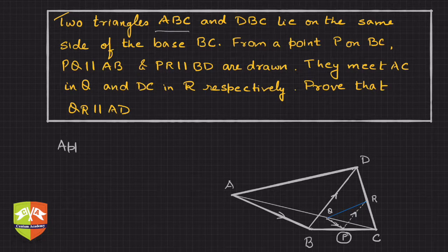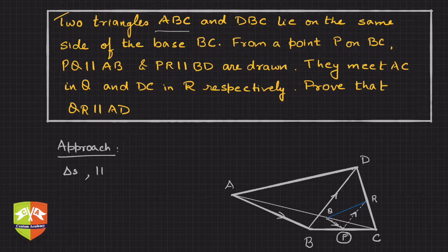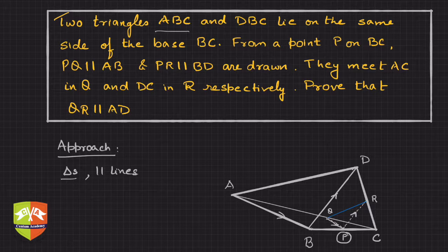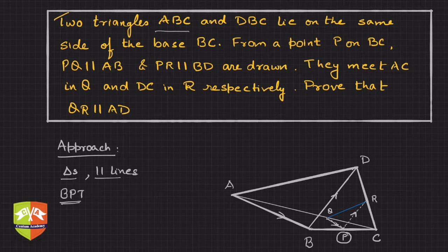Let's talk about the approach. There are triangles and parallel lines involved, so the first thing that comes to mind is the Basic Proportionality Theorem — Thales' Theorem. This is hinting that we are going to use BPT.